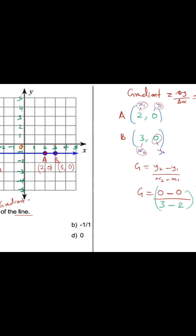Zero minus zero is zero, so our gradient is going to be zero divided by three minus two, which is one. Zero divided by a number equals zero, so our gradient is zero, and that is the correct answer.